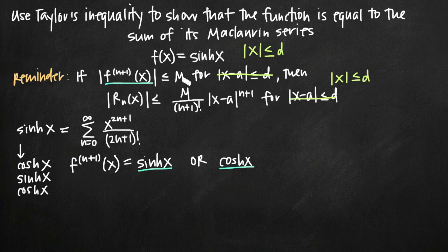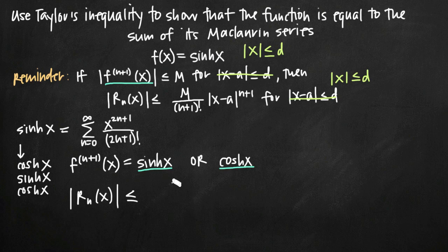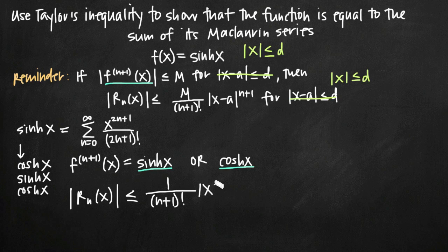So we pick M equal to 1, and then the remainder term R sub n of x satisfies the inequality that the absolute value of R sub n of x is less than or equal to 1 — the value we picked for M — divided by the quantity (n+1) factorial, times the absolute value of x raised to the (n+1) power, since we're dealing with the Maclaurin series and a equals 0.